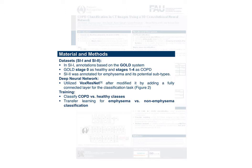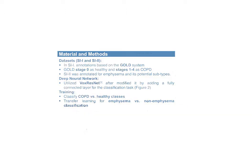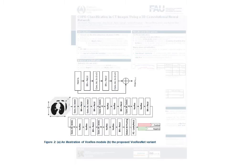For emphysema classification, we used the dataset SI2. SI2 was annotated for emphysema and its potential subtypes. We utilized Vox ResNet, which is a 3D implementation of ResNet, initially developed for segmentation tasks.